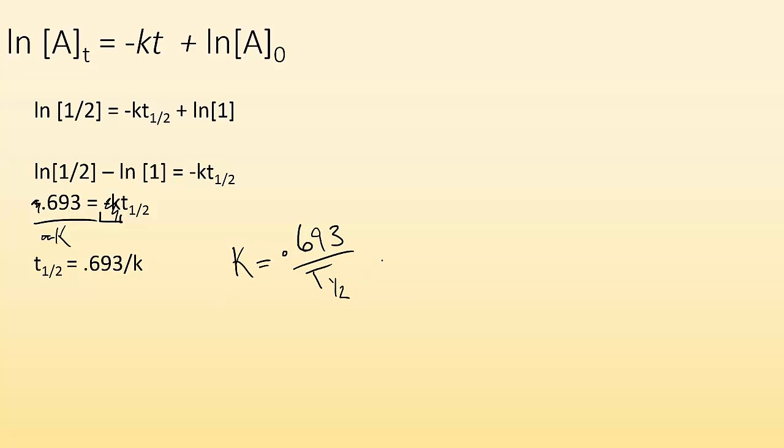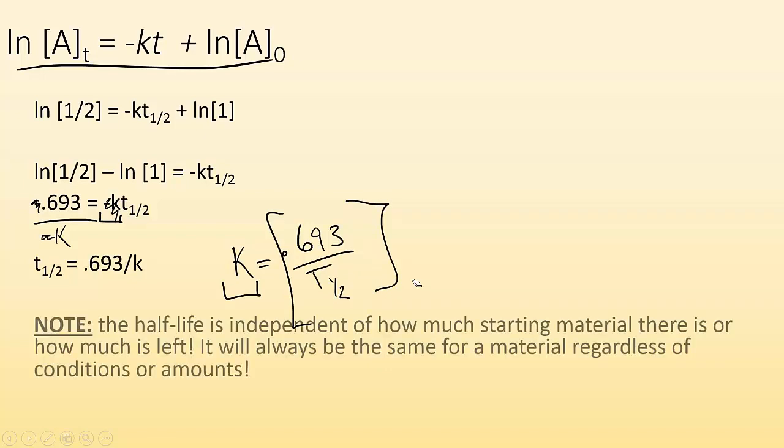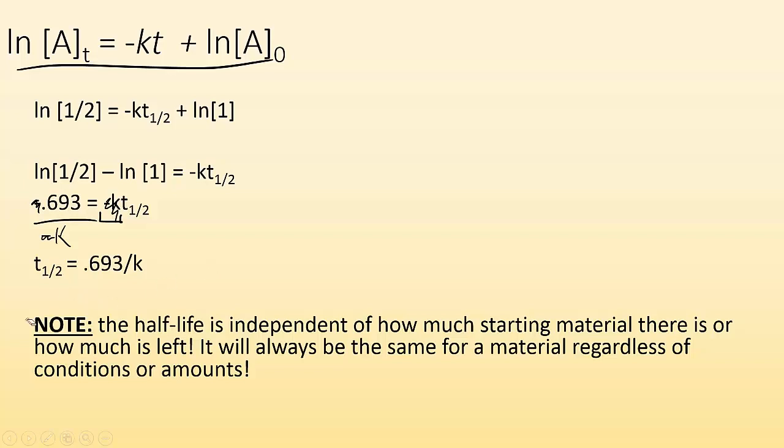So this is going to be helpful because a lot of times they'll give you the half-life for an isotope, but if you want to use this equation, you've got to find out what the K is. So oftentimes, instead of just K, you'll see this 0.693 over whatever they told you the half-life was. Note something to note about this: in my T1/2 expression, it's 0.693 and K, both of which are constant numbers. So the half-life is independent of how much starting material there is or how much is left.